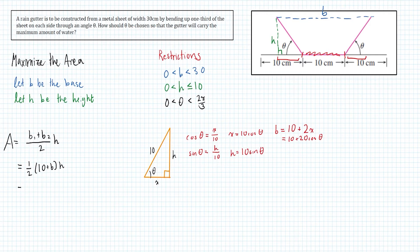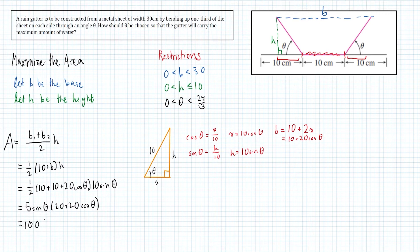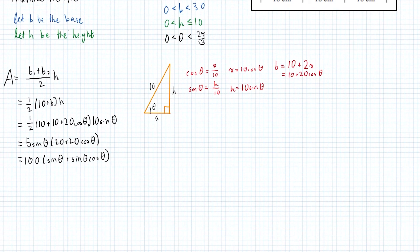Plugging these values into the area formula, we get one half times (10 plus 10 plus 20 cos theta) for b, and 10 sine theta for h. Simplified, this is 5 sine theta times (20 plus 20 cos theta). Distributing the sine and factoring out the 20, we get 100 times (sine theta plus sine theta cos theta). That's our area formula, and since we're looking for a maximum, we want to find where the first derivative is equal to zero.